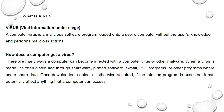How does a computer get a virus? There are many ways a computer can become infected with a computer virus or other malware. When a virus is made, it is often distributed through servers, pirated software, email, point-to-point programs, or other programs where users share data. Once downloaded, copied, or otherwise acquired, if the infected program is executed, it can potentially affect anything that a computer can access.